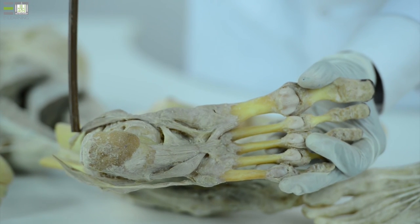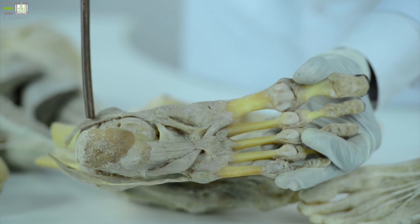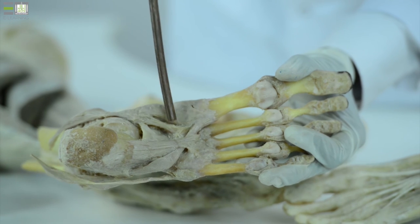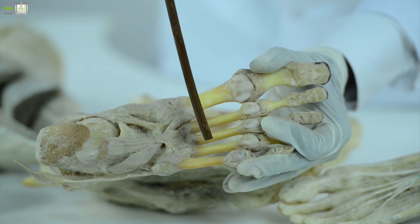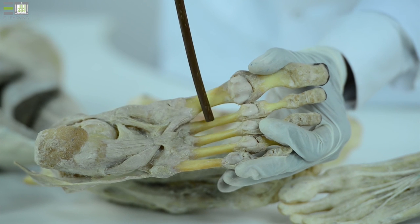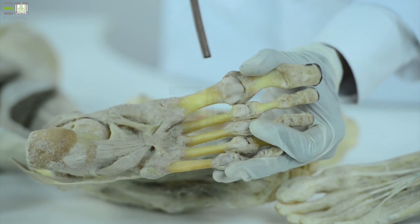And the other from the anterior compartment, from the deep compartment of the back, which is the tibialis posterior tendon, which is attached to the tarsal bones. Between the metatarsal bones, they are interossei arranged in two layers, dorsal and ventral interossei.